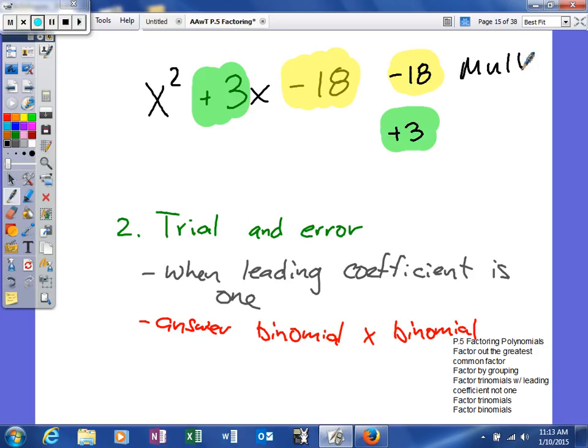We still think multiply, and we still think sum or difference. Because our product is negative, we are looking for our difference. Our factor pairs: 1 and 18, 2 and 9, 3 and 6. You should see a lot of repetition here.